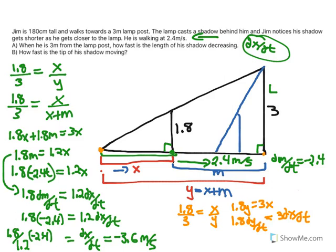And we're looking for how fast is this y changing with respect to time? So that's dy by dt. So I'm just going to isolate dy by dt equals 3 times dx by dt, which we just found to be negative 3.6 over 1.8. And that gives negative 6 meters per second.